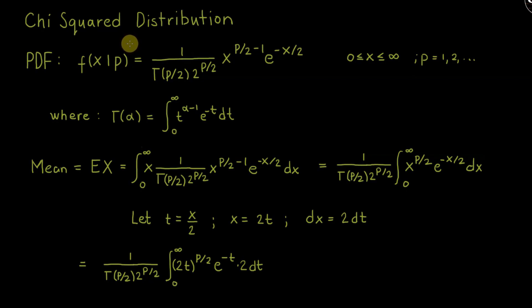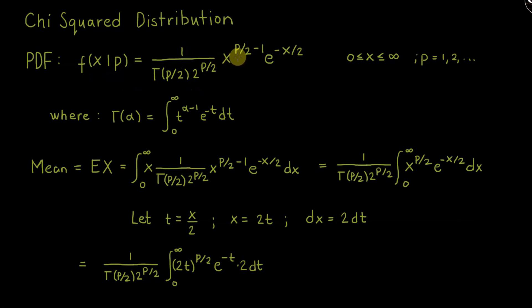The chi-squared distribution is a continuous probability distribution with the following probability density function or PDF. f(x) given the parameter p, which we call the degrees of freedom, is equal to 1 over [b·Γ(p/2)·2^(p/2)] times x^(p/2 − 1) times e^(−x/2), where x is defined from 0 to infinity and p is defined to be integers 1, 2, etc.